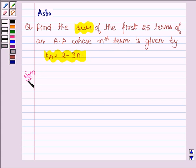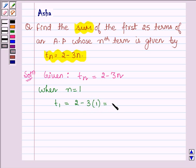Let's start with the solution. Here we are given that the nth term of an AP is 2 - 3n. So when n is equal to 1, the first term is 2 - 3(1) which is equal to -1.